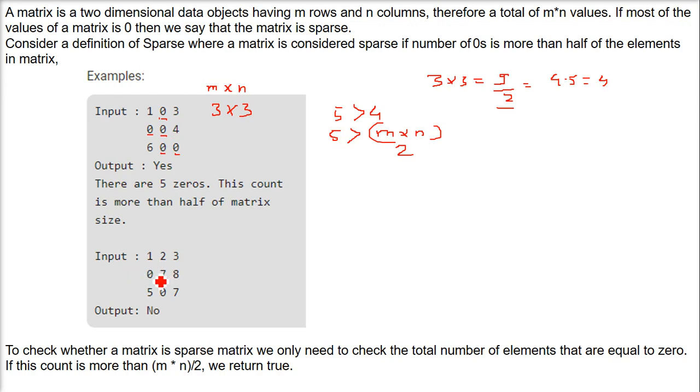Now let's come to this one. How many zeros are there? 1, 2. They are m into n by 2, so we have 9 by 2, the integer will take 4. So is 2 greater than 4? No. 2 is less than 4, so this is not a sparse matrix.